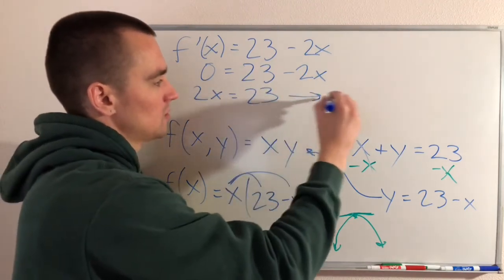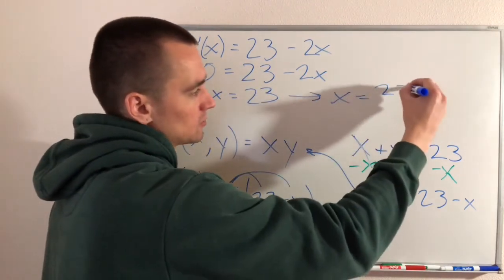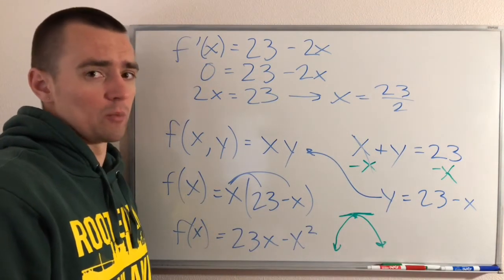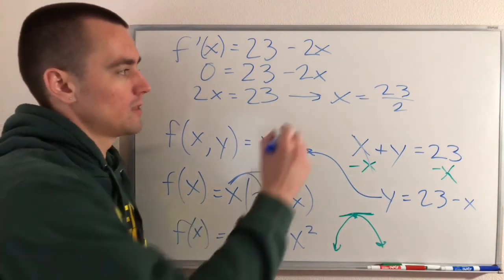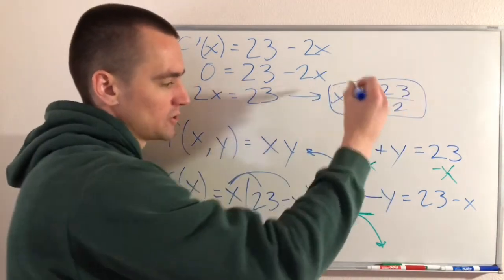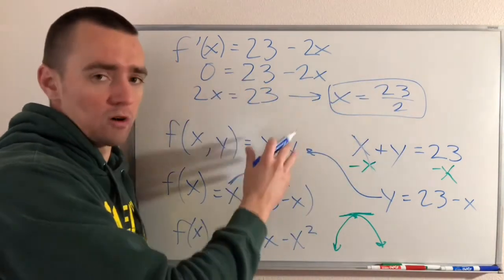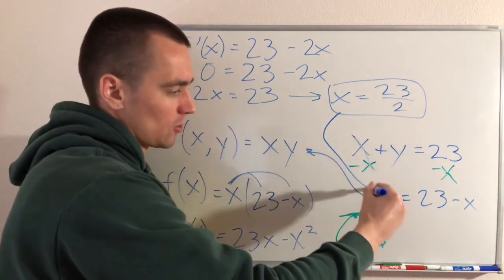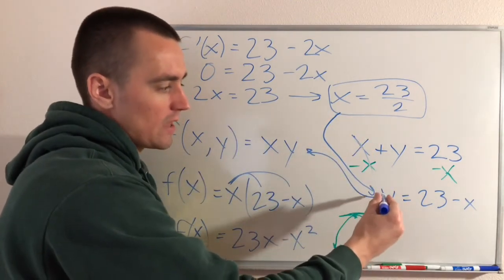So remember we need to find two numbers, so we're not quite done yet. We know that X equals 23 over 2 is going to be one of our numbers. Now we can take this and plug it into our equation that we have for Y, and that'll give us our other number.